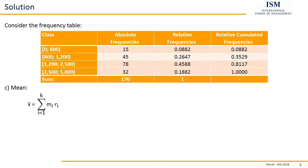And we need the averages of all the classes. That's the m_i. How do we get the class averages? For this, we just add up lower and upper bound and divide this by two.